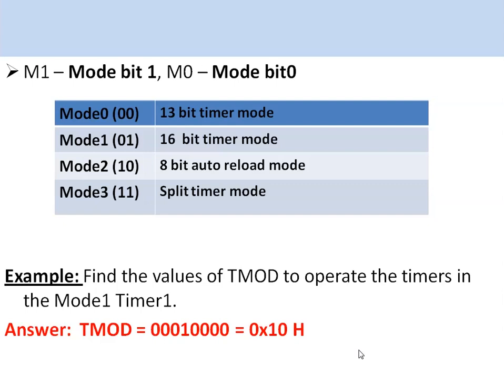Mode bit 1 and mode bit 0 are the two bits used for selecting different timer configurations: mode 2 is the 8-bit auto-reload mode, mode 1 is the 16-bit timer mode, and mode 0 is the 13-bit timer mode.